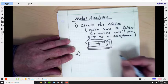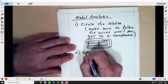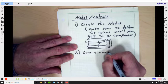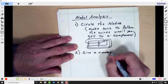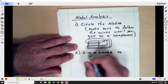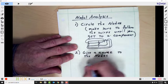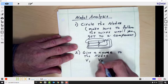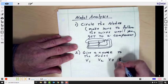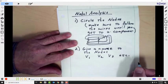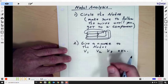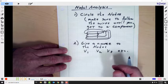And then step two, give a name to the nodes. Usually something like V1, V2, V3, etc. Again, I wouldn't expect to see anything with more than three unknown nodes in it.